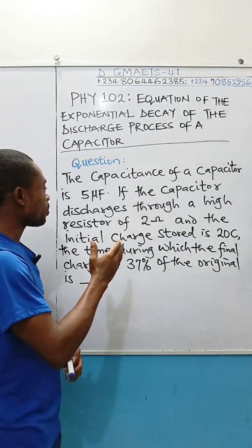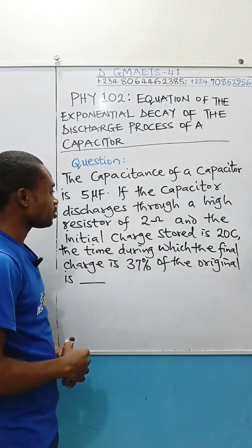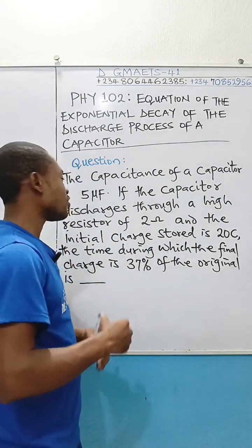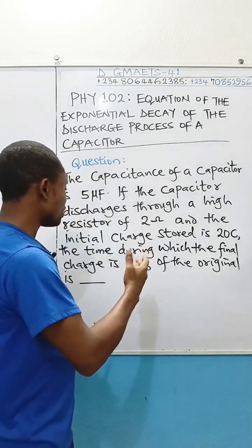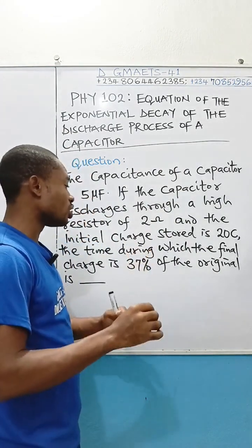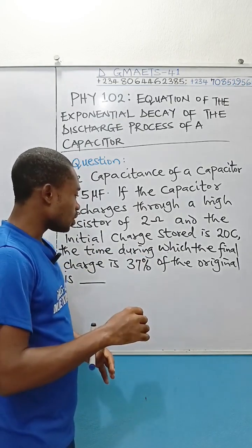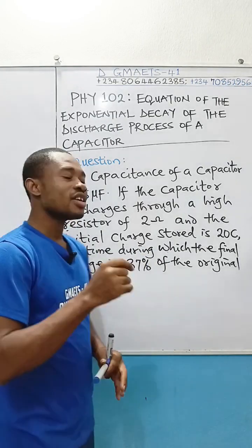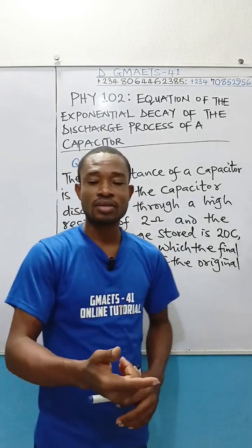The capacitance of a capacitor is 5 microfarad. If the capacitor discharges through a high resistor of 2 ohms and the initial charge stored is 20 coulombs, the time during which the final charge is 37% of the original is...